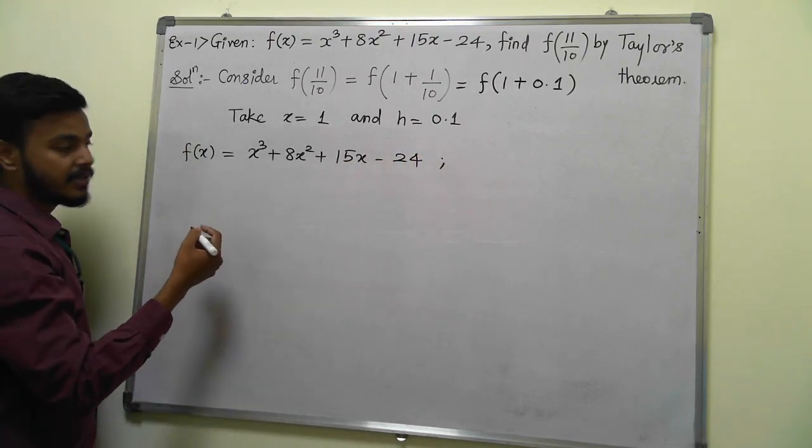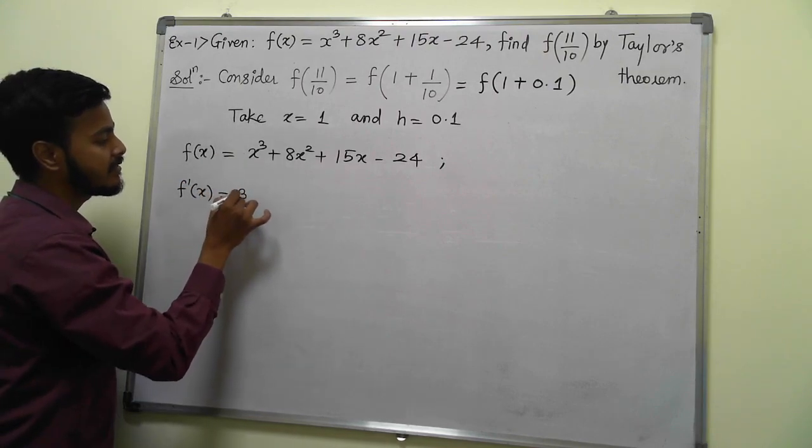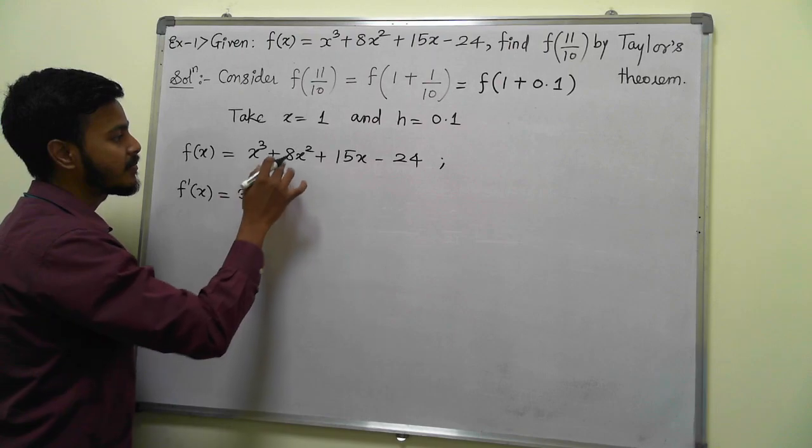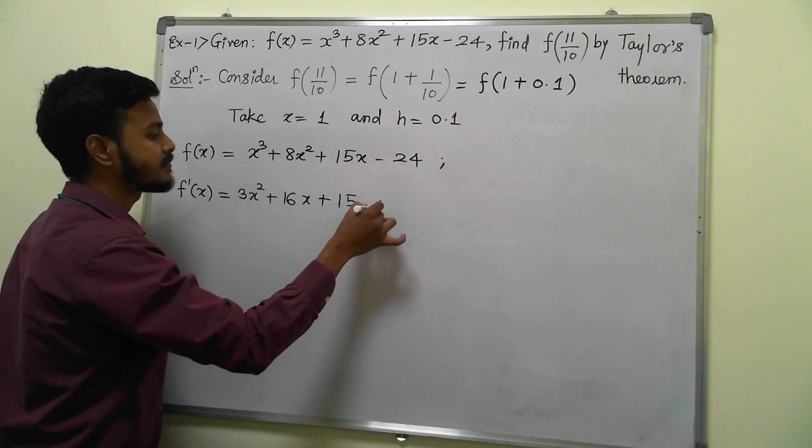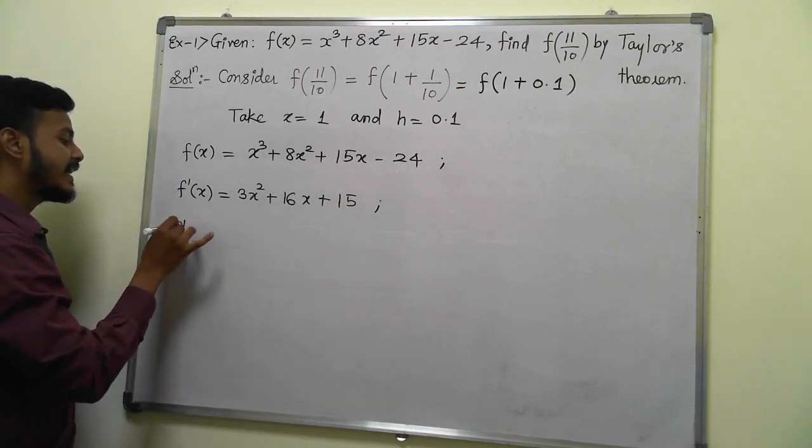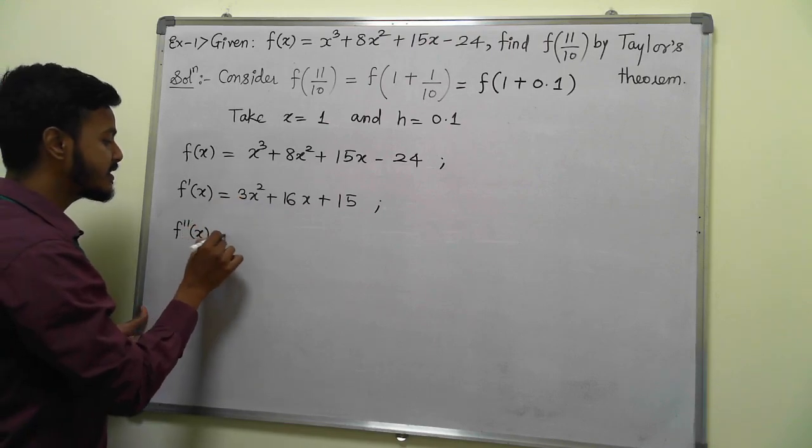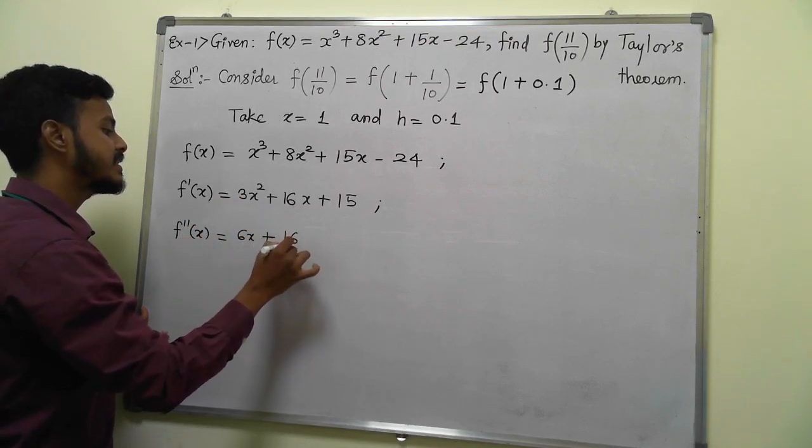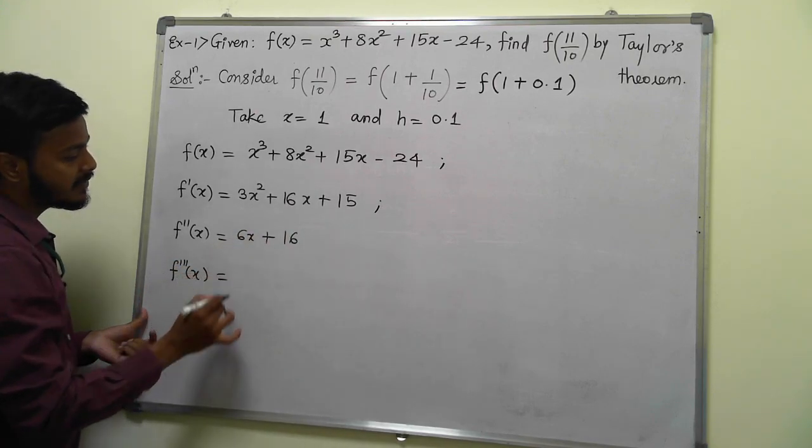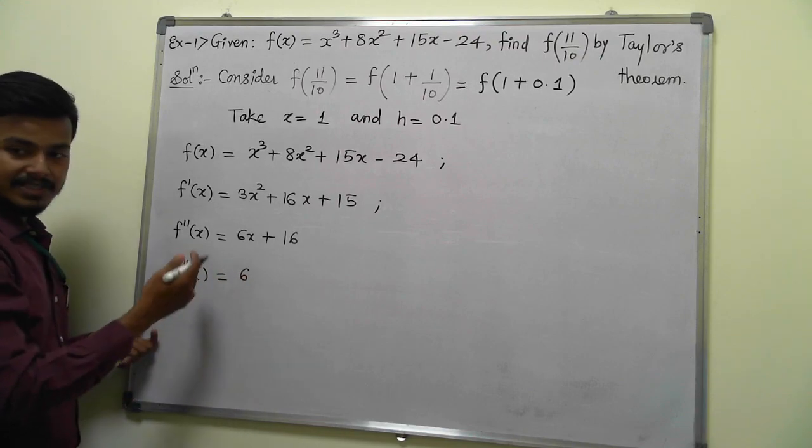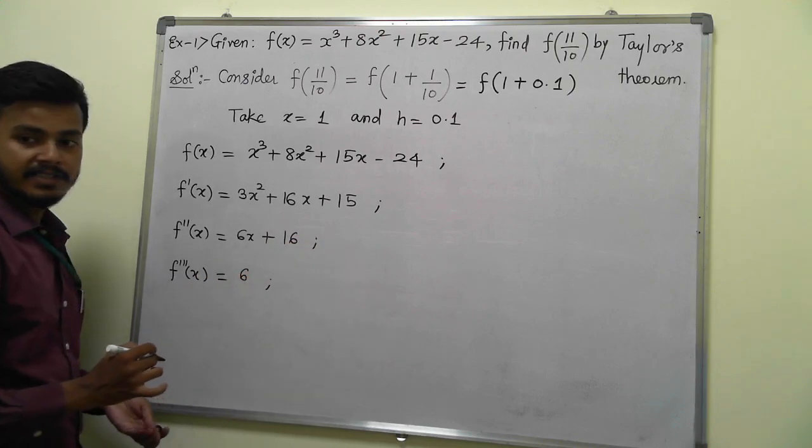Now find the successive derivatives. f'(x) = 3x² + 16x + 15. The second derivative f''(x) = 6x + 16. One more derivative: f'''(x) = 6, and the rest of the derivatives will be 0, so there's no point in finding those derivatives.